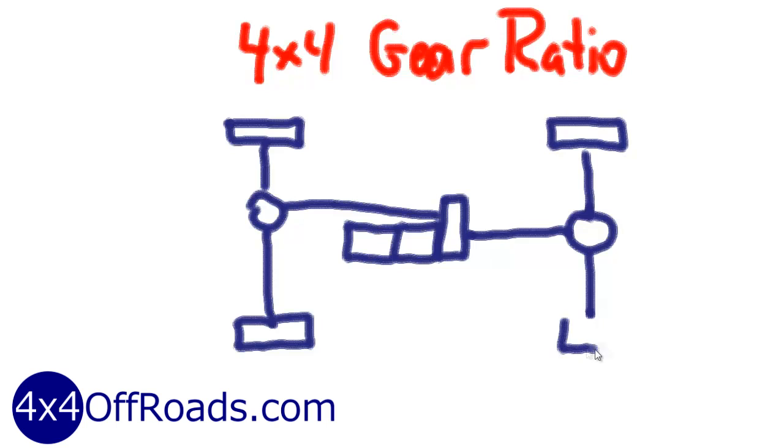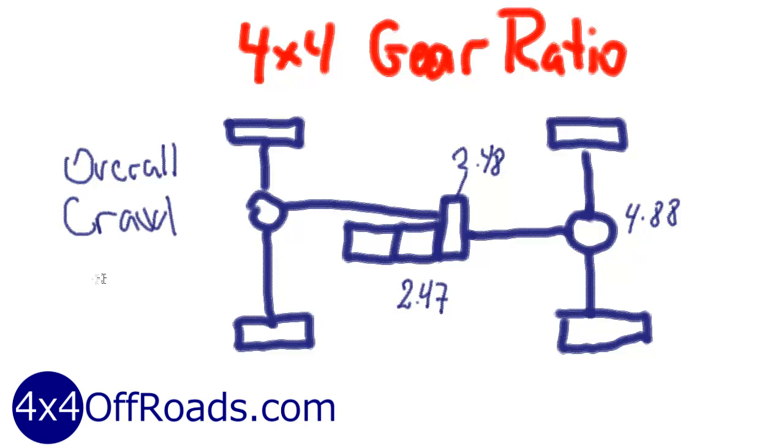Taking my own 4x4 as an example, it has a transmission with the lowest gear of 2.7 and the 4 low is 2.8. My differentials are 4.88. Multiplying these three ratios gives me the overall gear ratio or crawl ratio of 29.77, a reasonably low number for a 4x4 with an automatic transmission.